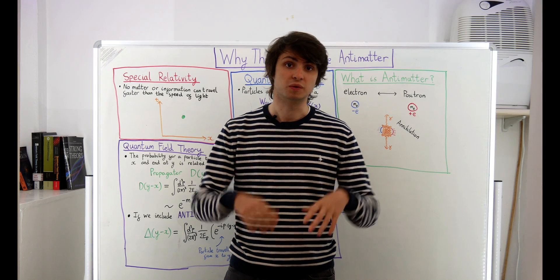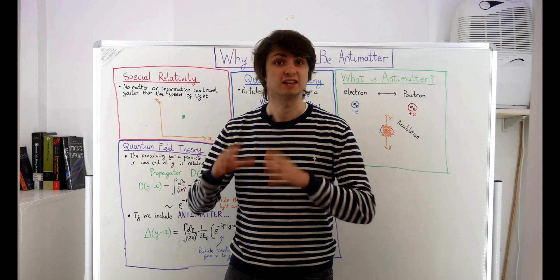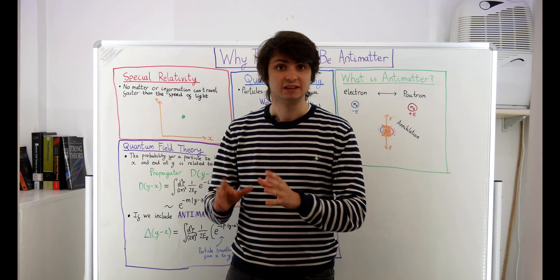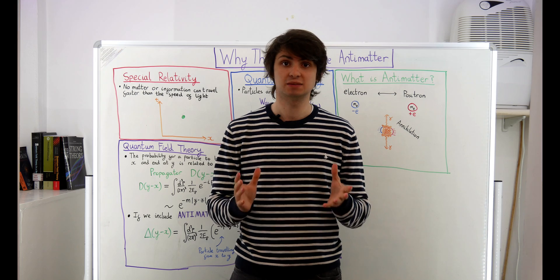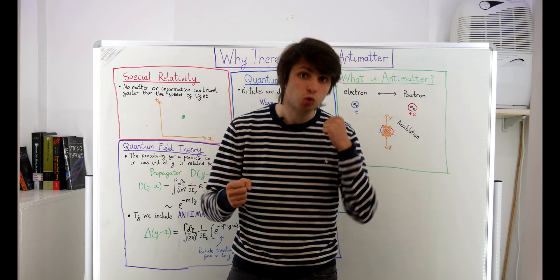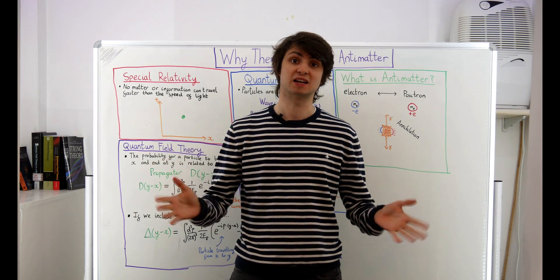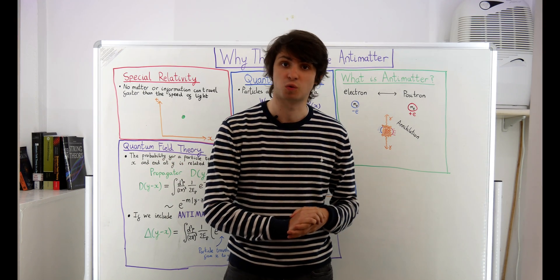It all has to do with the speed of light and a curious phenomenon known as quantum tunneling. In order to understand why antimatter exists we're going to need to take a look at how special relativity and quantum mechanics can be combined. So come and join me as we embark on a special quantum journey.